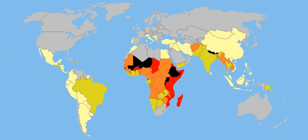UNICEF estimates that India, with its larger population, has the highest number of labourers in the world under 14 years of age, while sub-Saharan African countries have the highest percentage of children deployed as child labourers. The International Labour Organization estimates that agriculture, at 60%, is the largest employer of child labour in the world, while the UN Food and Agriculture Organization estimates 70% of child labour is deployed in agriculture and related activities.